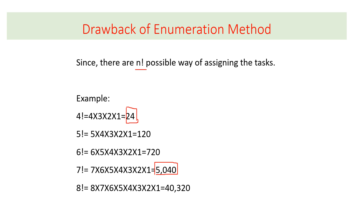This is the main drawback of the enumeration method — it is not applicable for higher numbers. In that case, we have to look at another method called the Hungarian method to find the optimum solution of the assignment problem. Thank you for listening. This is all for today and we will meet in the next lesson on the Hungarian method. Till then, have a good time, bye bye.